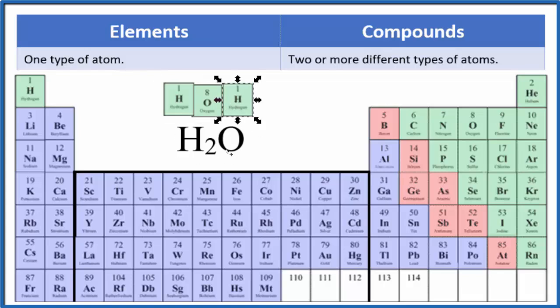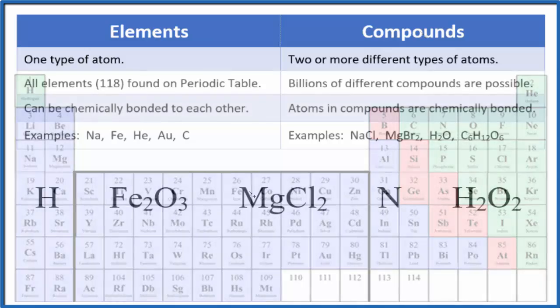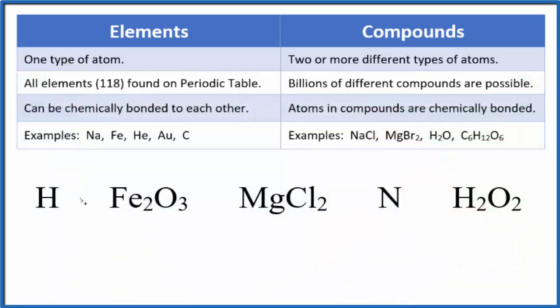The periodic table is a list of all of the elements and we can combine elements to make compounds. So pause and determine which of these are elements and which are compounds.